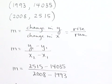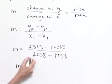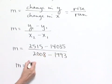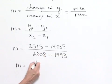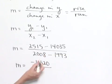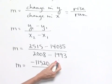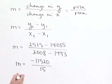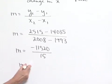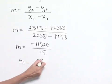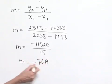We'll now do our subtraction. M equals, in our numerator, 2515 minus 14,035, which gives us negative 11,520. In our denominator, 2008 minus 1993 gives us a difference of 15. Dividing gives us our m value, which equals negative 768.